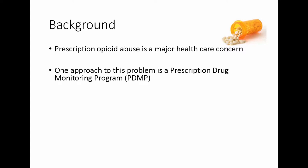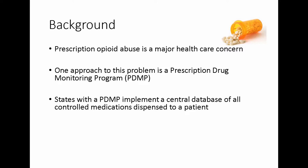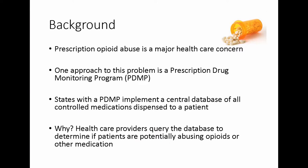One approach to tackling this problem is implementing a prescription drug monitoring program, or PDMP. This is a federally funded program that states implement. All 50 states have this program. They implement a central database containing all controlled medications dispensed to a patient. Healthcare providers query the database to determine if patients are potentially abusing opioids. If a doctor wants to prescribe a medication, they might check this database first. This also helps with doctor shopping, where patients go to multiple doctors for the same medication.